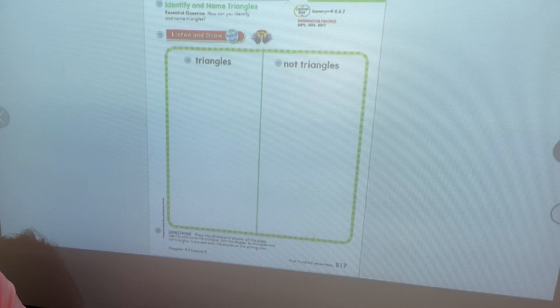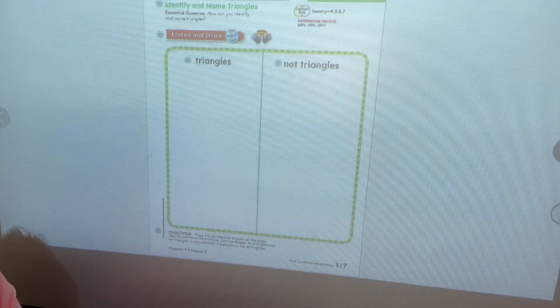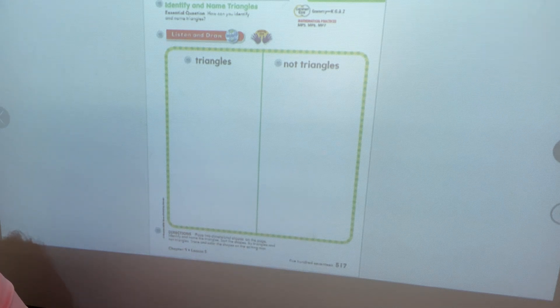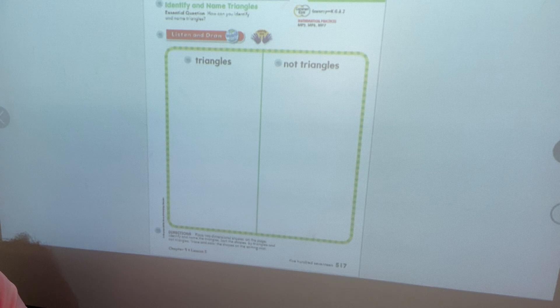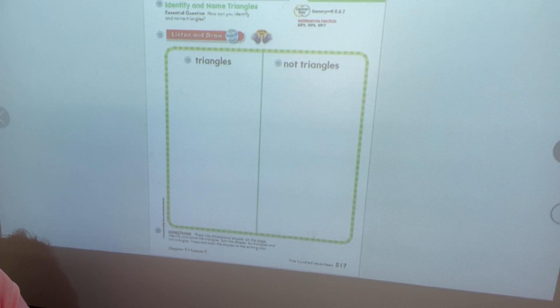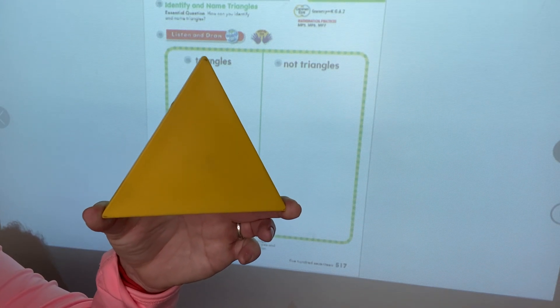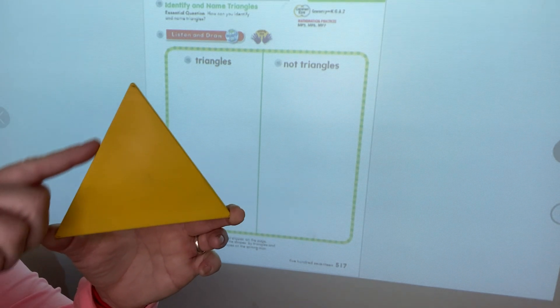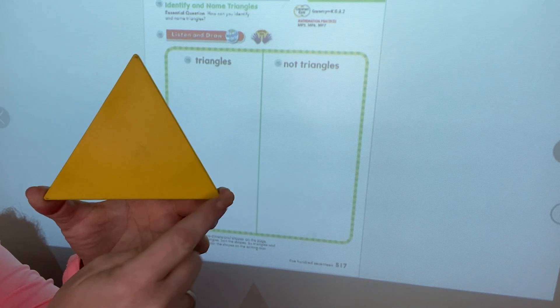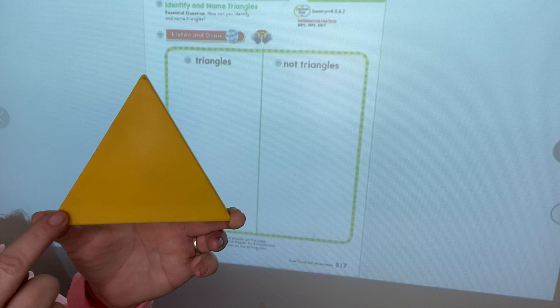It has sides and it has vertices, but it only has three vertices and three sides. Do you know what the shape is? It begins with the letter T. It's a triangle. Good job, boys and girls. A triangle has three sides and it has three corners or three vertices.